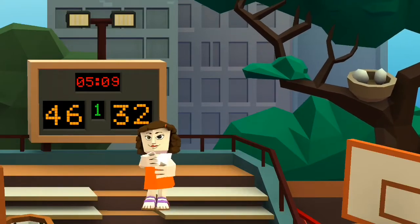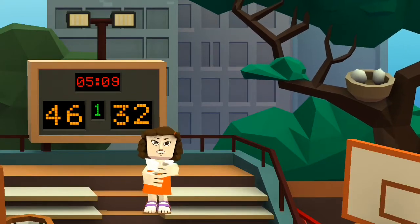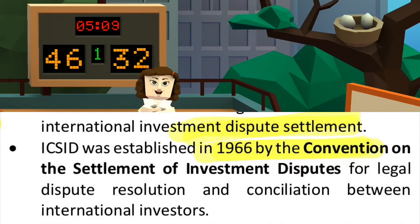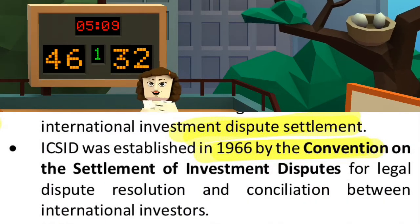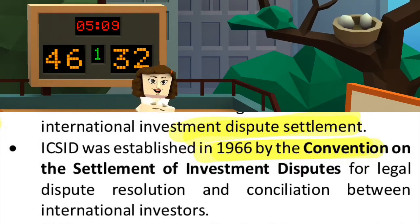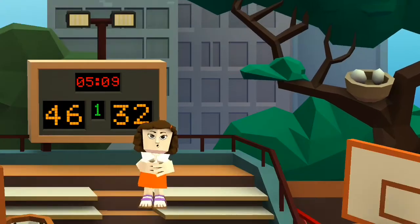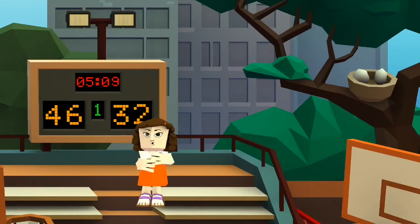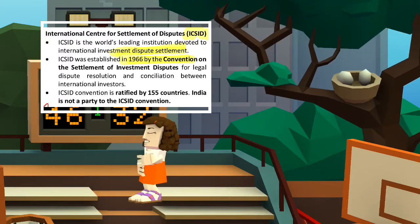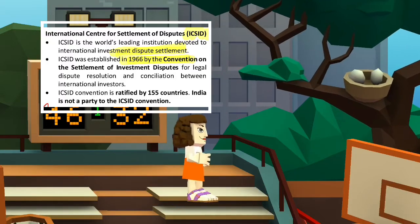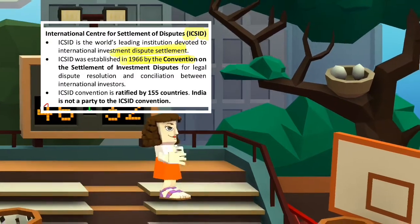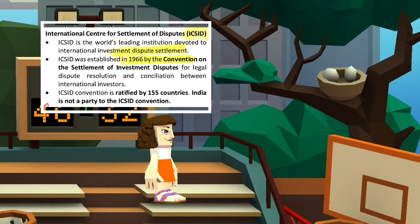We are going to talk about an institution called the International Center for Settlement of Dispute, ICSID. ICSID is a world-leading institution that settles all investment-related disputes. It is currently active in 155 countries.